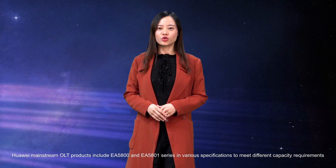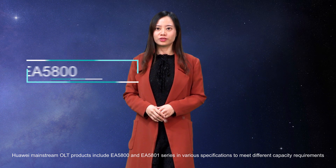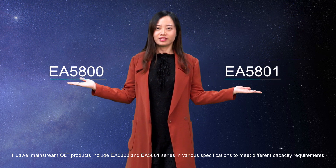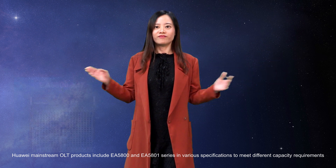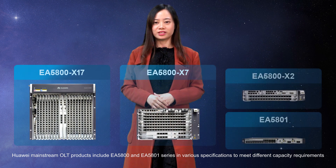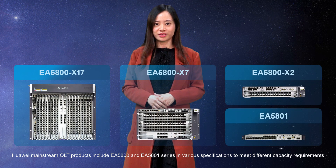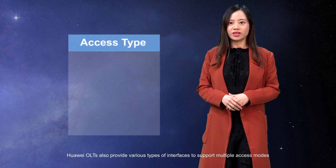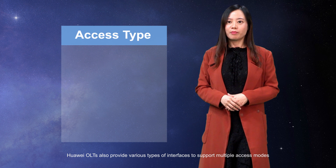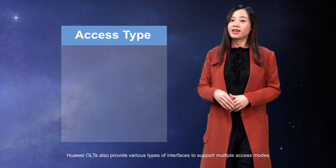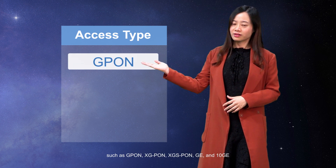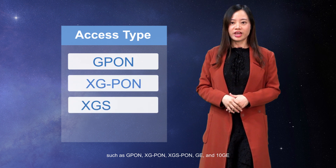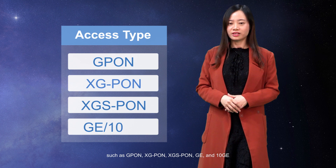Huawei mainstream OLT products include EA5800 and EA5801 series in various specifications to meet different capacity requirements. Huawei OLTs also provide various types of interfaces to support multiple access modes such as GPON, XG-GPON, XGS-PON, GE, and 10GE.